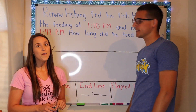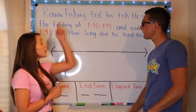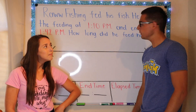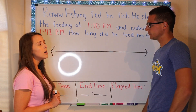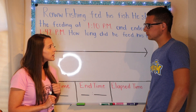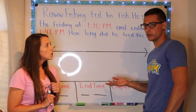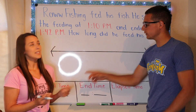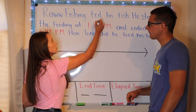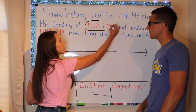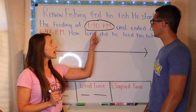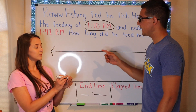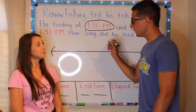Let's get ready to teach Raw Fishing how to figure out elapsed time. My question says, 'Raw Fishing fed his fish. He started feeding at what time?' I think it was like 1:10 PM. Is that important information? Isn't your start time usually very important? So that must be the first step — let's circle it. So he started at 1:10 PM and ended at 1:42 PM — circle it, that is important information.